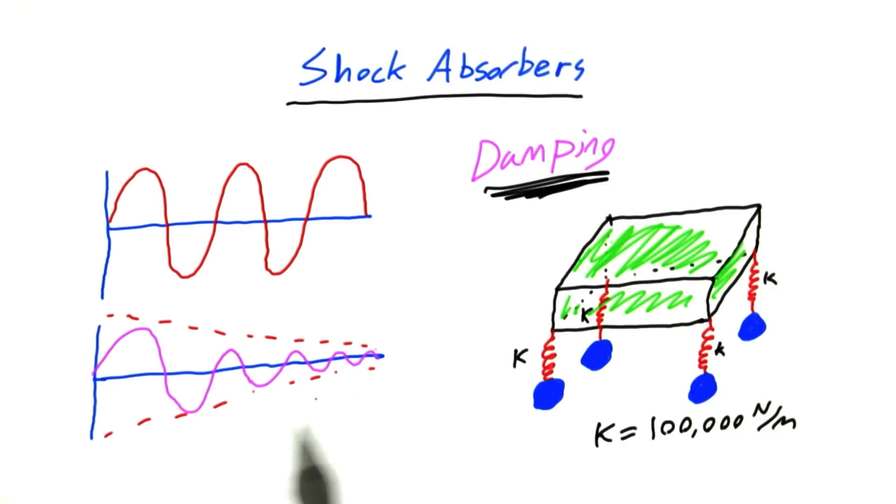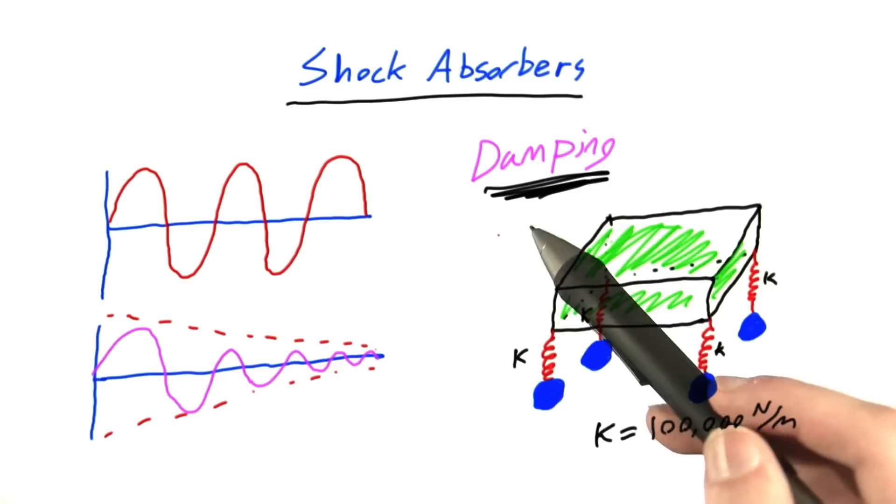So in real life, oscillations often look a lot more like this, where they start out with a large amplitude, just like before, but the longer they continue to oscillate, the smaller their amplitude becomes as they lose energy. And this phenomenon is called damping.